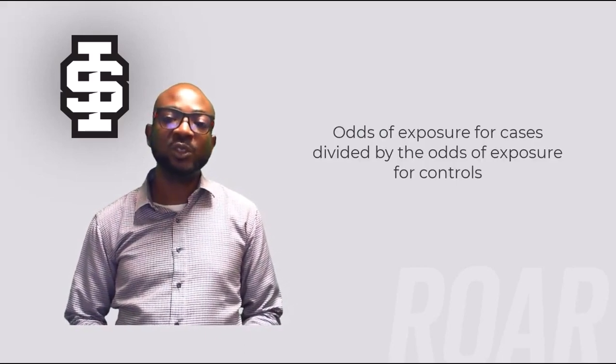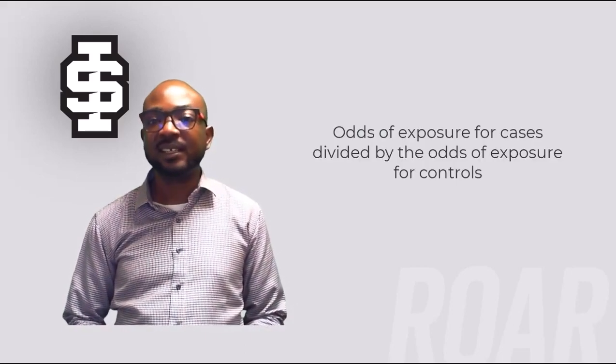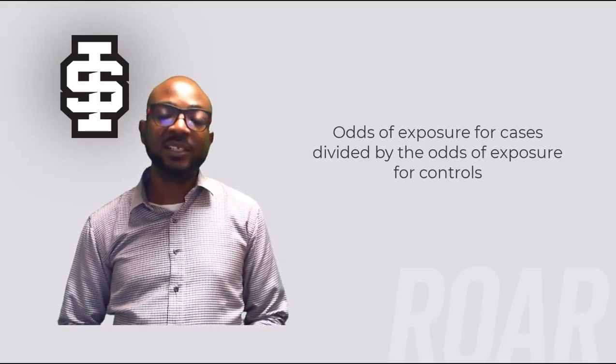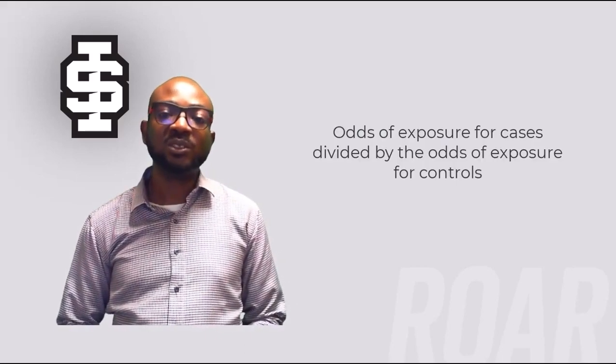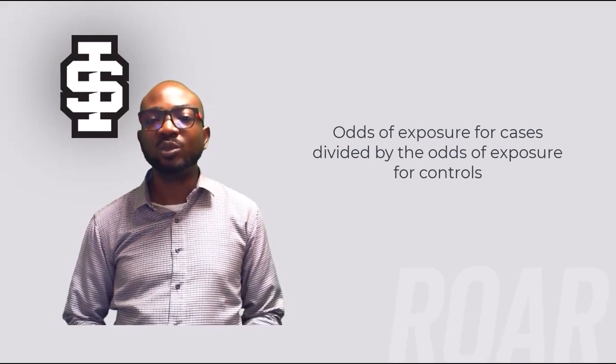The odds ratio is simply the odds of exposure for cases divided by the odds of exposure for controls. The odds ratio represents the strength of association between exposure and outcome, and is obtained by creating a 2x2 table.